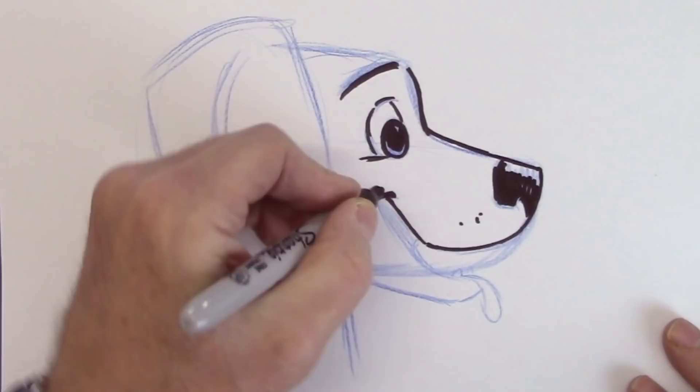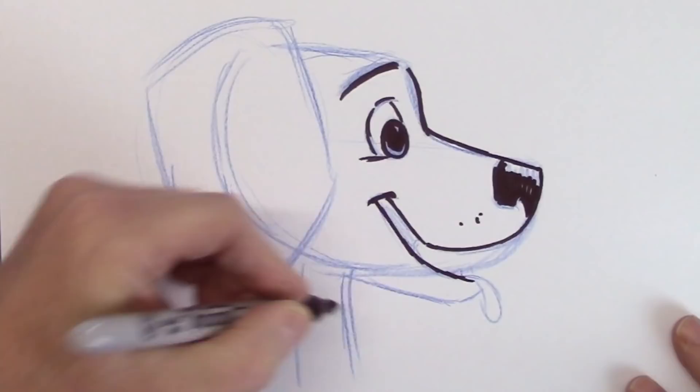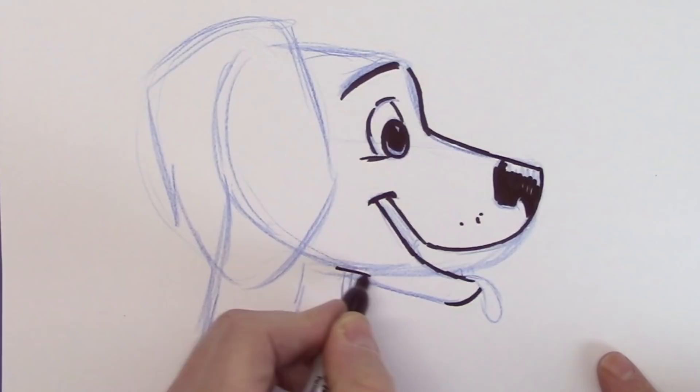Now follow this down. Flatten it out. Cup it down here. A little cup. And then bring it out here to a line that kind of travels a little bit down.